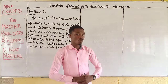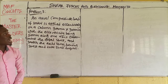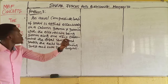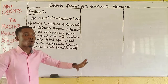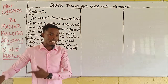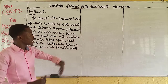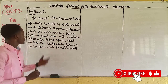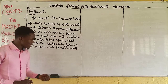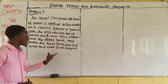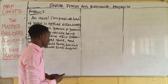Now, if this is taken, let's get to the business of the day. On the board we have Problem 3. We have an axial compressive load of 100 kN applied eccentrically on a column 300 mm by 300 mm, with the eccentricity being 50 mm along one axis. Determine the total stress and sketch the axial stress, bending stress, and total stress diagrams.